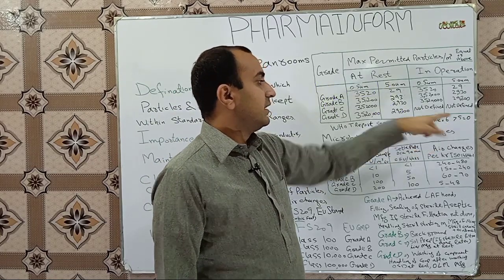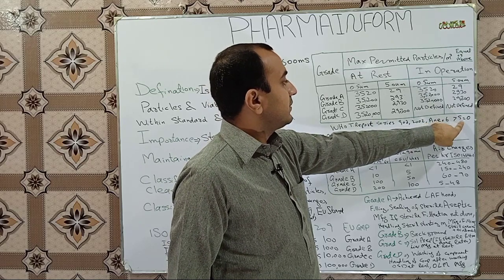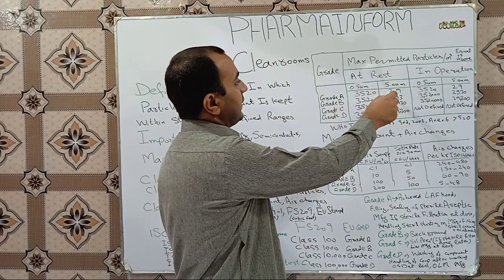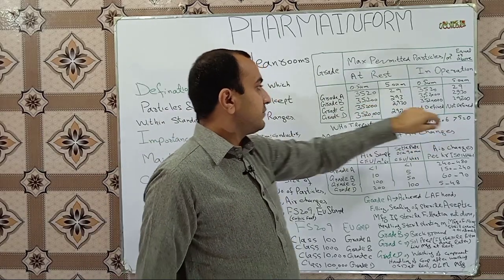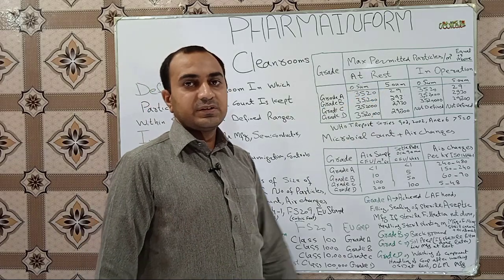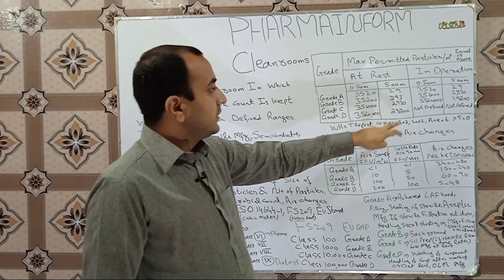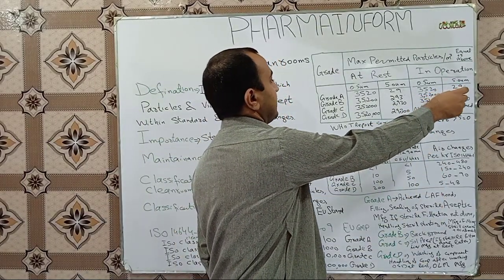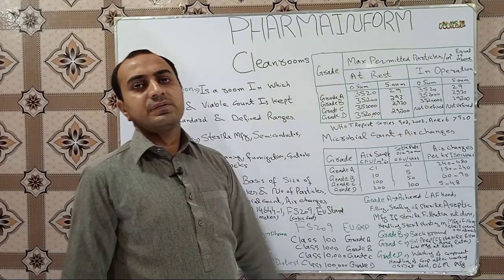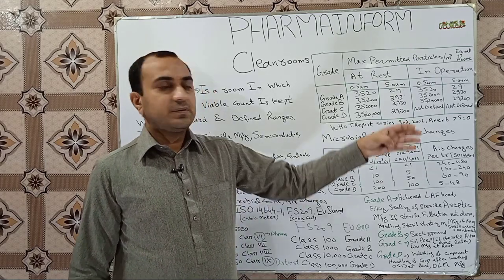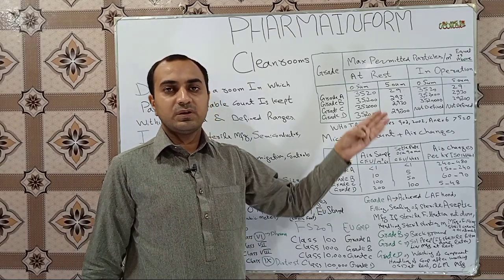Some updated guidelines — such as Annex 1 (2022) — have changes. They state that particles greater than 5 micron in Grade A at rest should be 0, and in Grade B at rest should be 0. Similarly, in Grade A in operation, particles above 5 micron should be 0. These are some updates; latest guidelines may indicate separate numbers of particles.